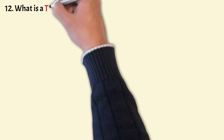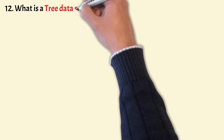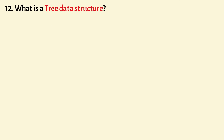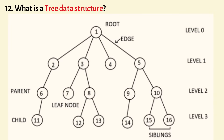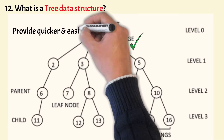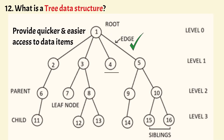What is a tree data structure? A tree is a non-linear hierarchical data structure consisting of nodes connected to one another by edges. Nodes in a tree contain data items. Since trees are a non-linear data structure, they provide quicker and easier access to data items compared to linear data structures.